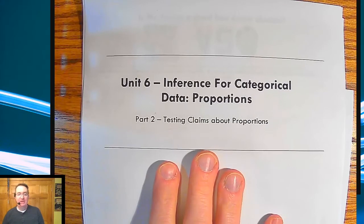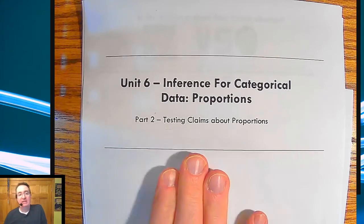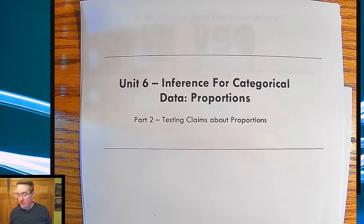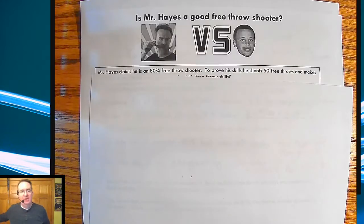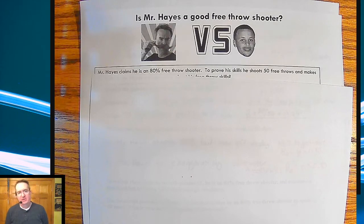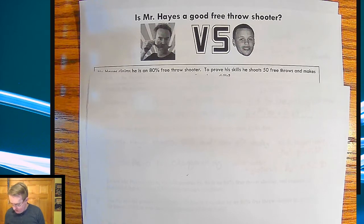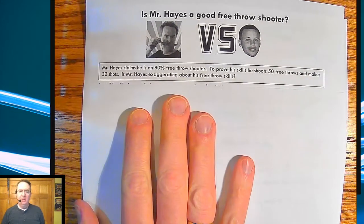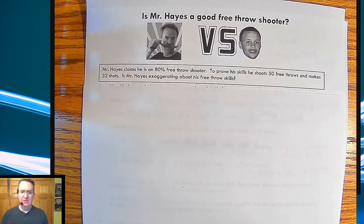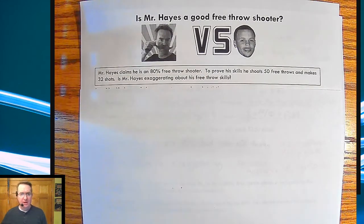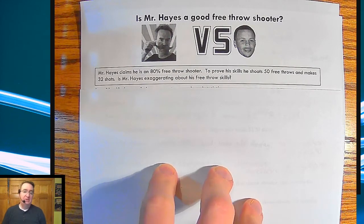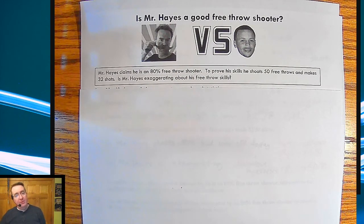What we're going to be talking about is testing claims. What this is going to do is allow us to say, if a company says we have a 97% satisfaction rating, we can kind of test that and see if that's true. We're going to go back to an example we did earlier in the year about me shooting free throws. All these notes — link down below for the second part of unit six. All of these lessons are based off of stuff Stats Medics did, and you can find the link for them down below.